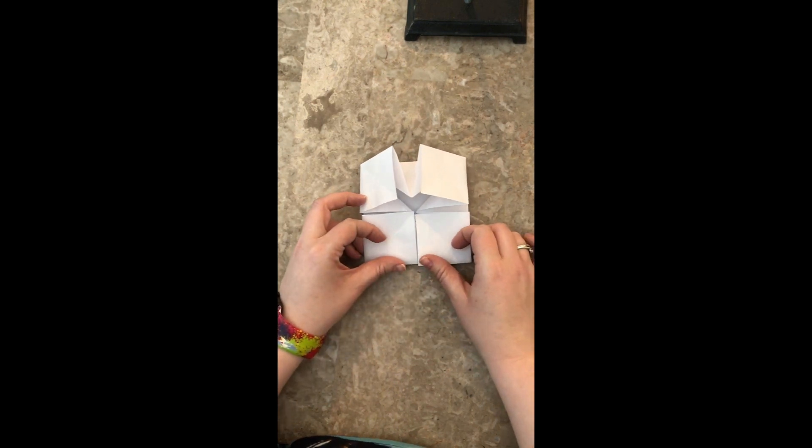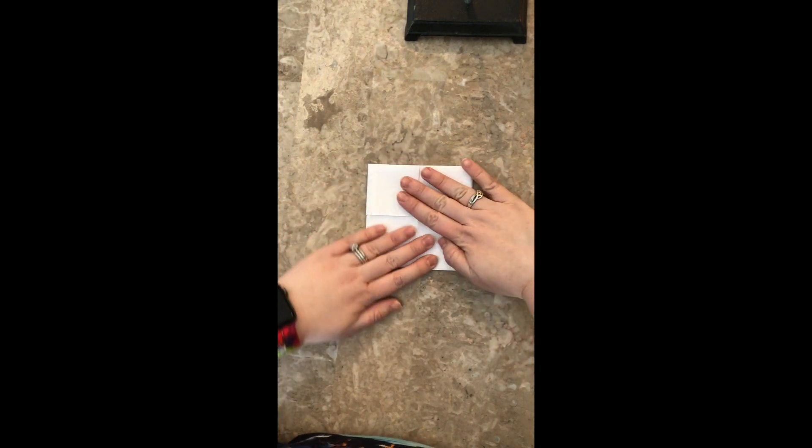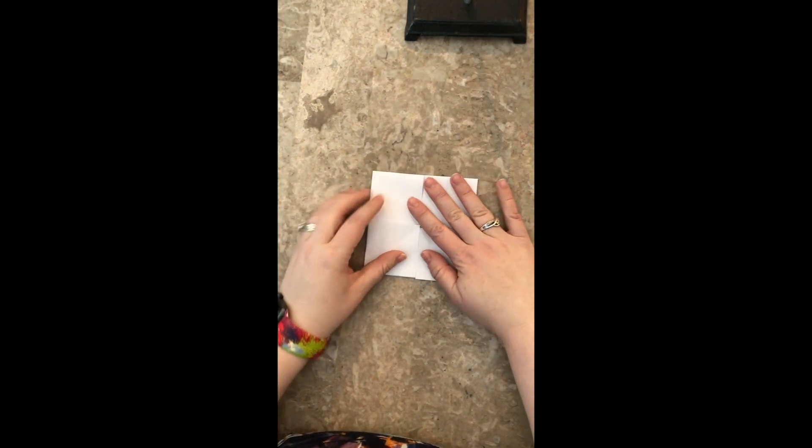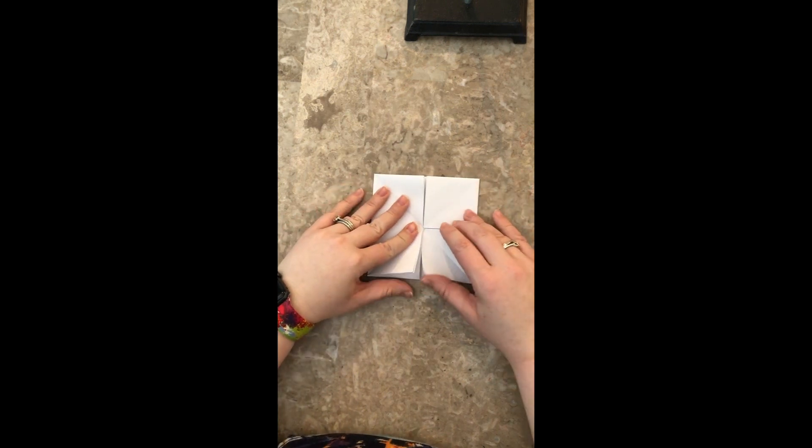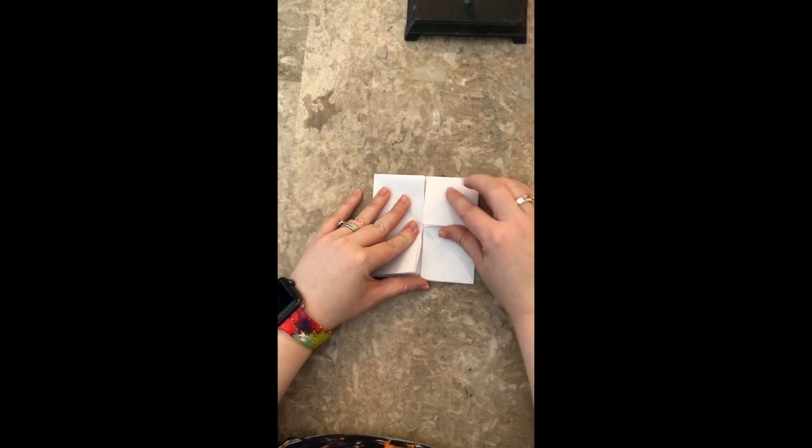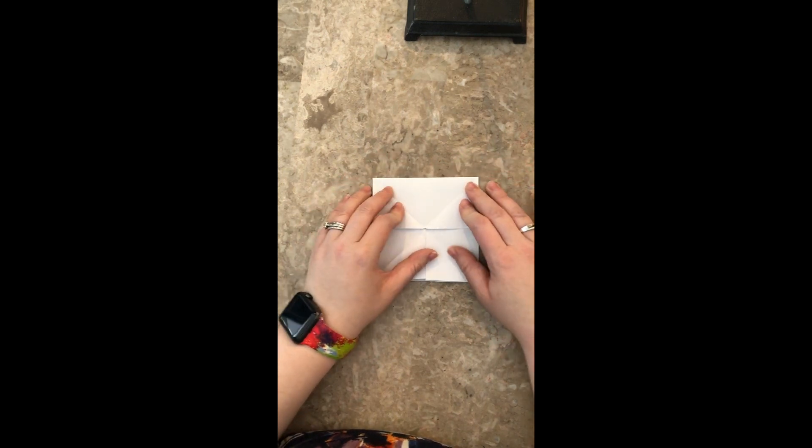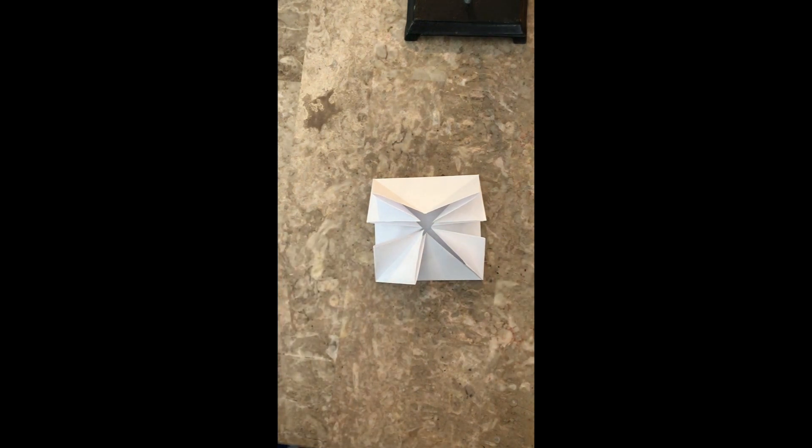I promise you, once you figure out how to do the first side, the second side is easy peasy. Once you're done, you should have a square that has a whole bunch of little flaps that are going around. This is really important because this is where we'll be drawing the different parts of our emoji. Looks great.